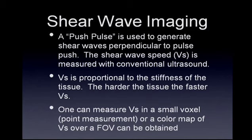For shear wave imaging, a push pulse is used to generate shear waves perpendicular to the push pulse, and the shear wave speed VS is measured with conventional ultrasound. VS is proportional to the stiffness of the tissue—the harder the tissue, the faster the VS. One can measure VS in a small voxel as a point measurement or use a color map of VS superimposed over the field of view to get a wide field-of-view image of shear wave velocities.